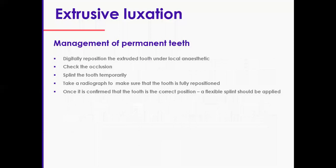In permanent teeth, reposition the extruded tooth — gentle but firm pressure is required. Check the occlusion: ask the patient to bite together and check that the back teeth are contacting. Splint temporarily, then take a check radiograph to make sure the tooth is fully repositioned in the socket before you put the definitive splint on. If you are struggling to reposition, check your examination again and make sure your diagnosis is correct, as you may have a different type of injury requiring a different manipulation.